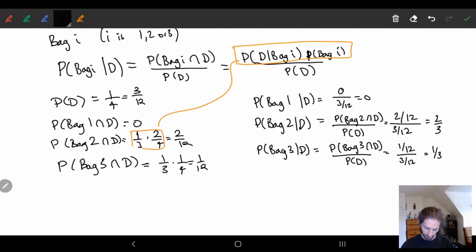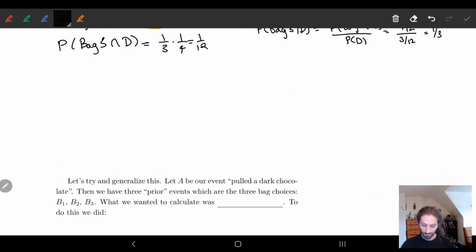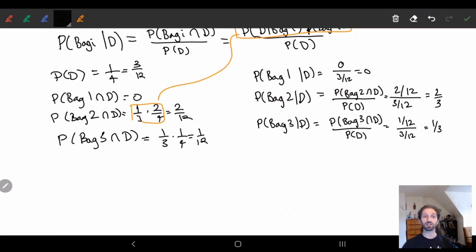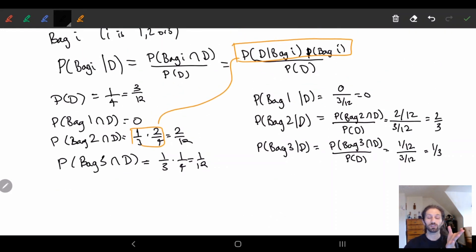So we actually know exactly what the probability is of where this dark chocolate came from. If you say what's the probability that it came from each bag, well more likely than not it came from bag two. I'm going to choose bag two.